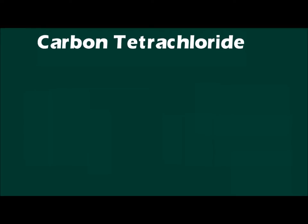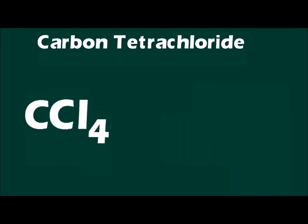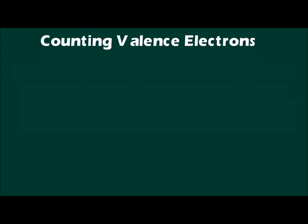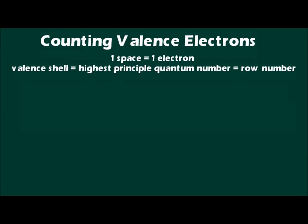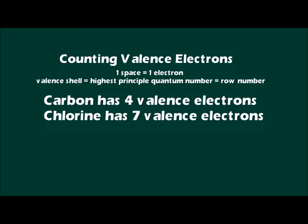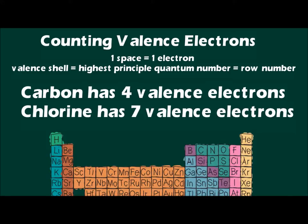The first step in drawing Lewis structures is to determine the total number of valence electrons available for the molecule. This is done by summing the valence electrons for all atoms in the molecule. To determine valence electrons for an atom, it is convenient to use the periodic table. Count the number of spaces in the row containing the atom, from left to right, until you reach your atom. Each space counts as one electron.